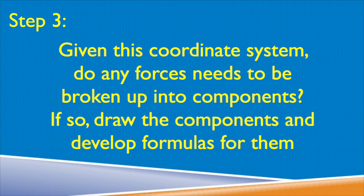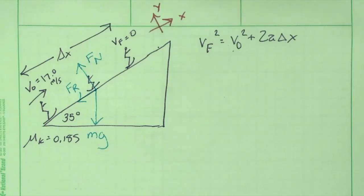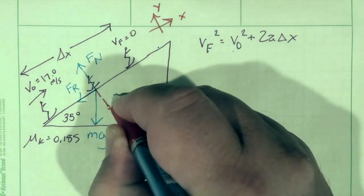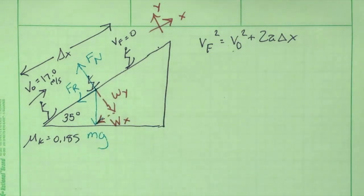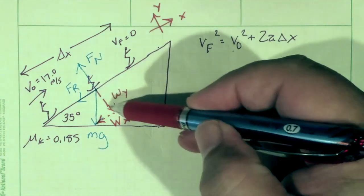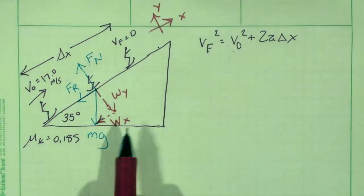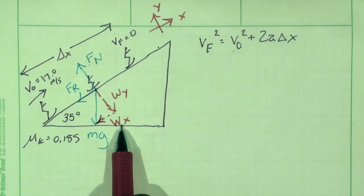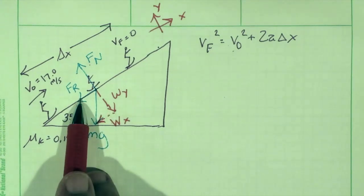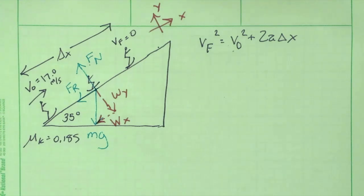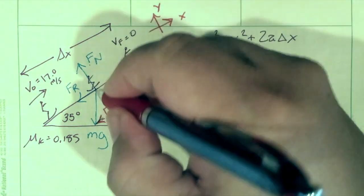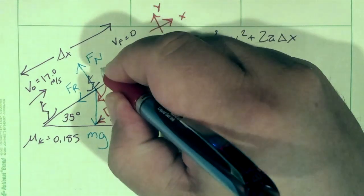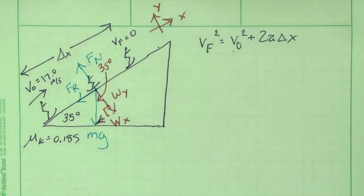Having established that coordinate system, we ask ourselves: given this coordinate system, do any of the forces need to be broken up into components? The answer is yes. The weight force can be broken up into two components given our new definition of x and y. The weight force has a component perpendicular to the slope opposing the normal force, and an x component which is actually down the slope — in the same direction as the friction force. The angle between the weight force and the y component is the same as the angle of the incline, 35 degrees.